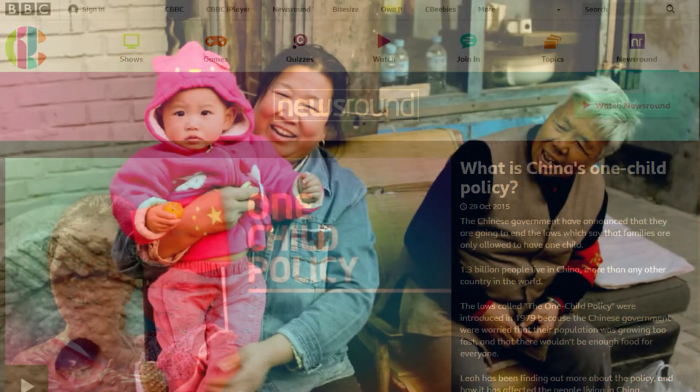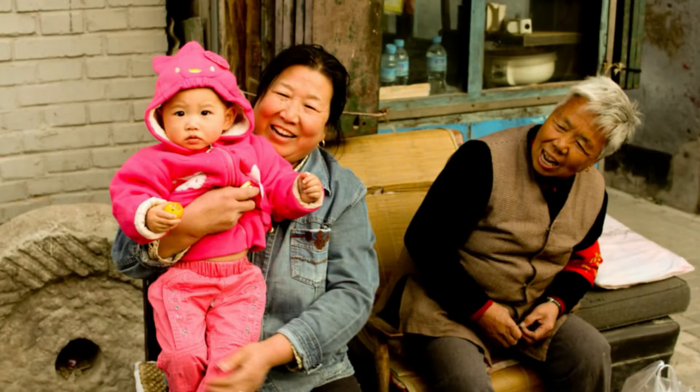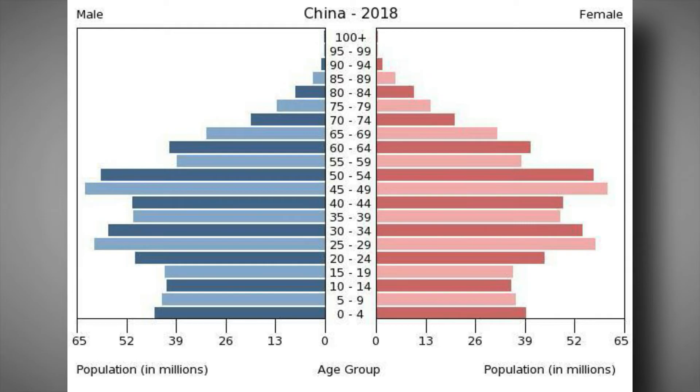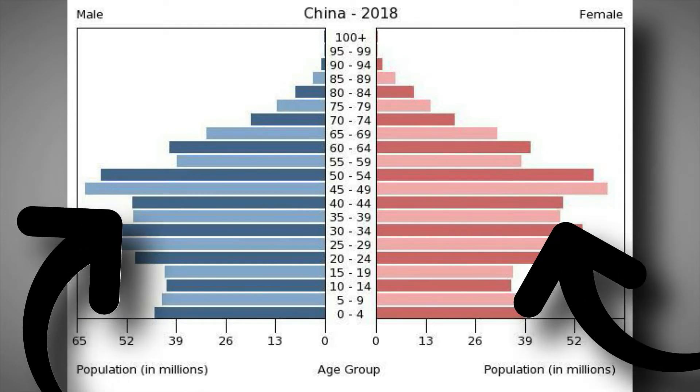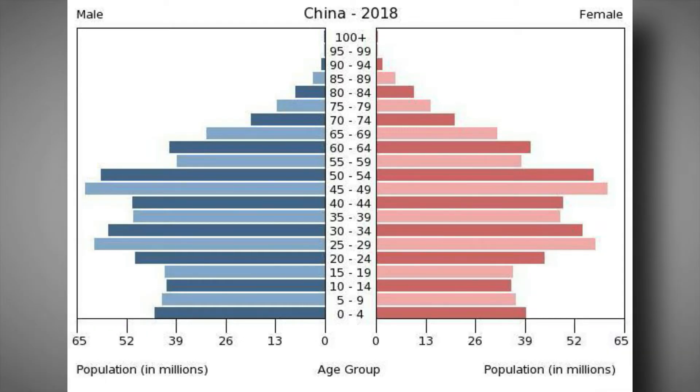They saw that their population was growing at an extremely fast rate and it needed to be limited. Otherwise, they risked exceeding their carrying capacity. And so they implemented a very controversial law. It was that only one child could be born per a family. Now, recently, China has actually doubled back on that and they've started to modify it.